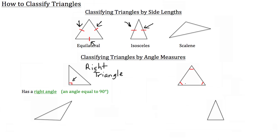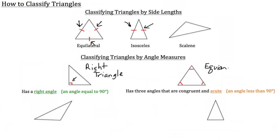The second type of triangle is the triangle to the top right. This type of triangle has three angles that are congruent and acute, making it an equiangular triangle. Notice that it's similar to equilateral in classifying triangles by side lengths — equi meaning equal, lateral meaning sides — so equiangular just means equal angles.